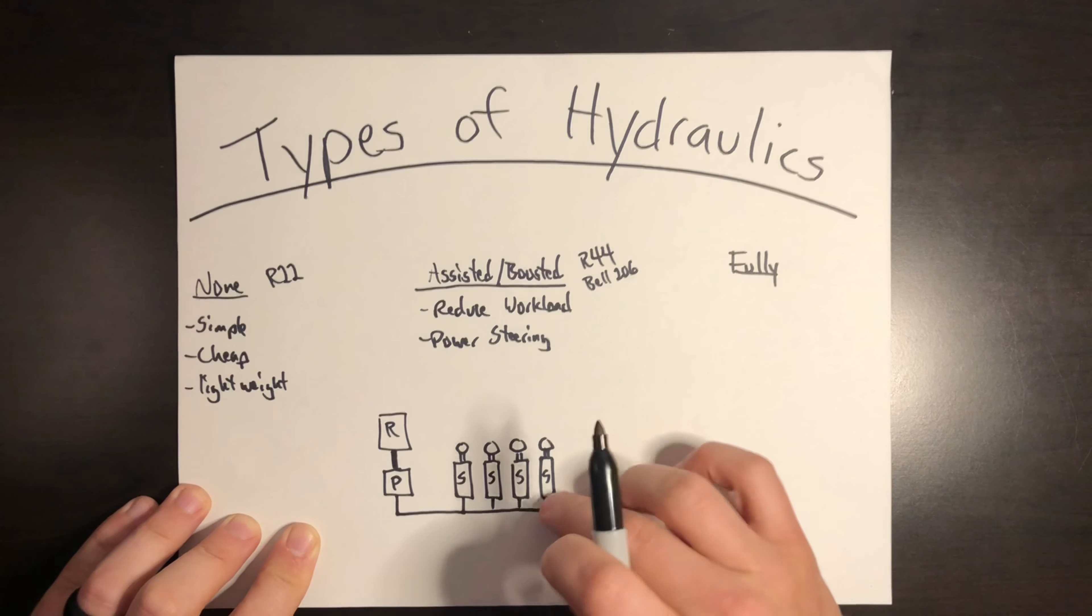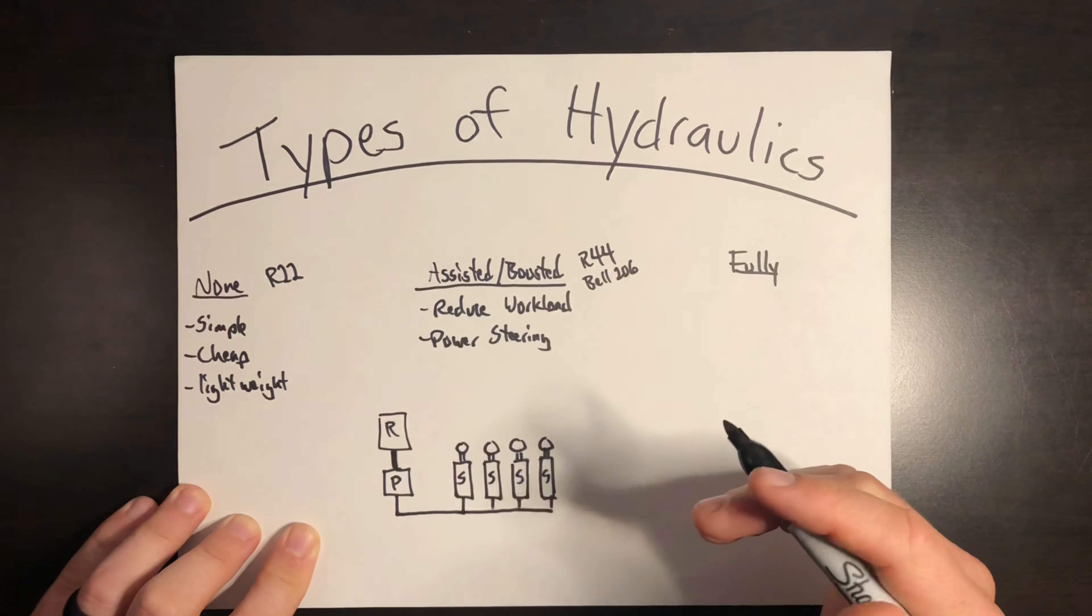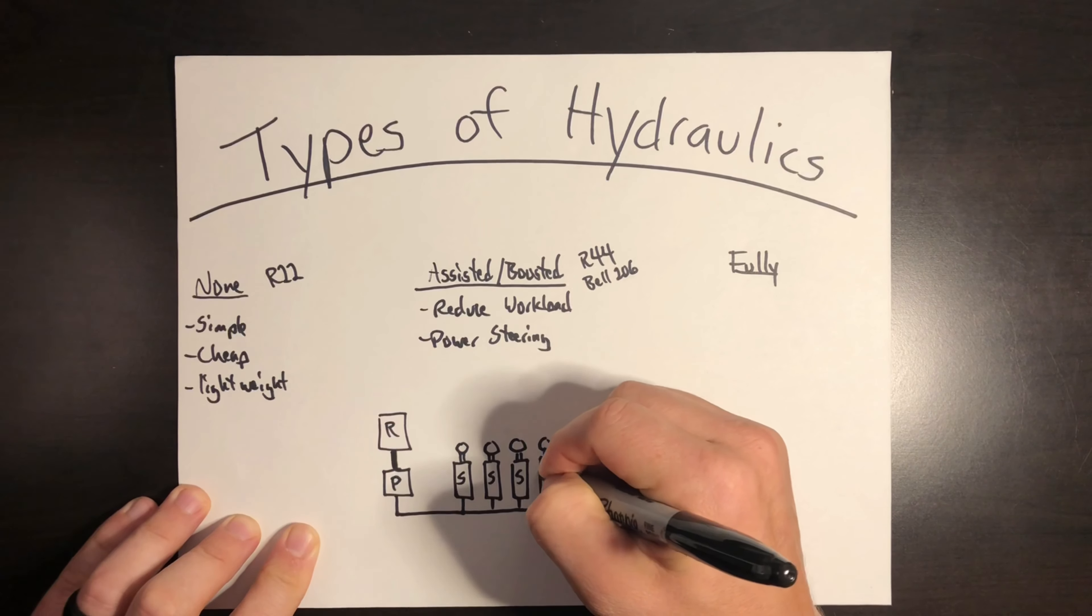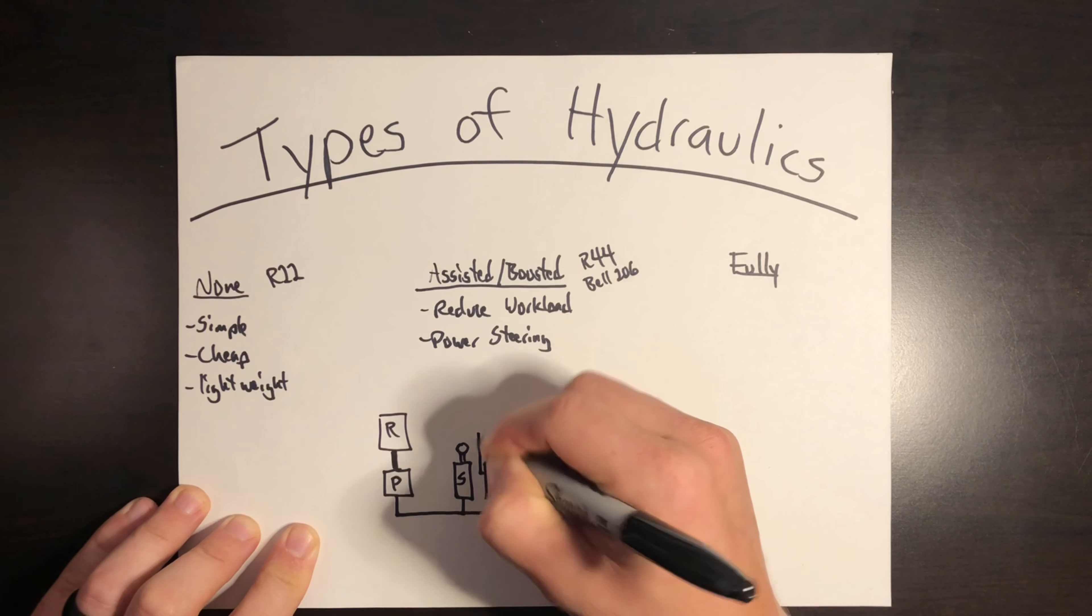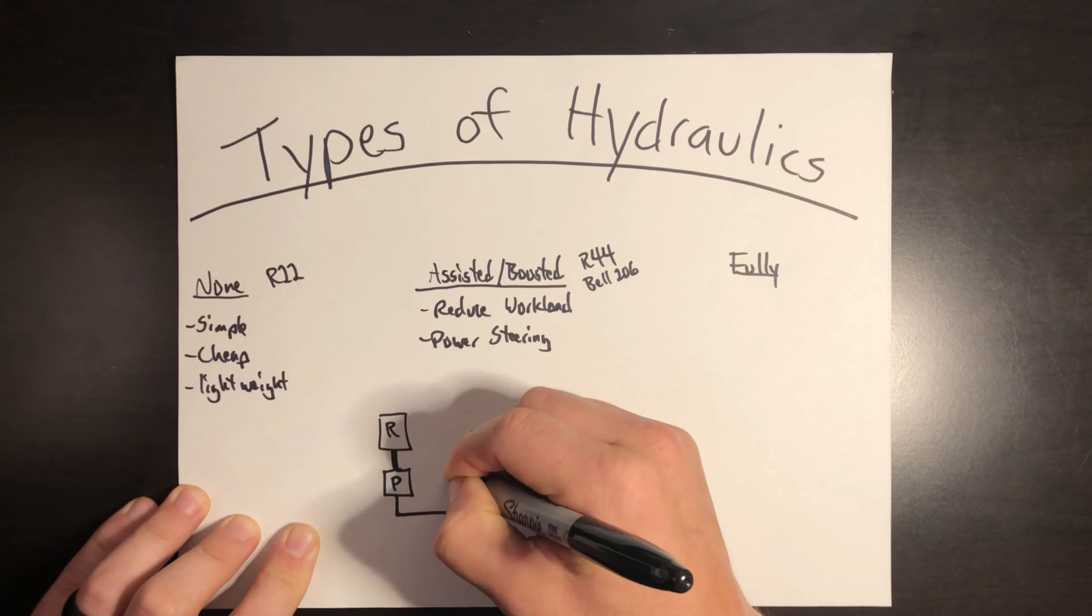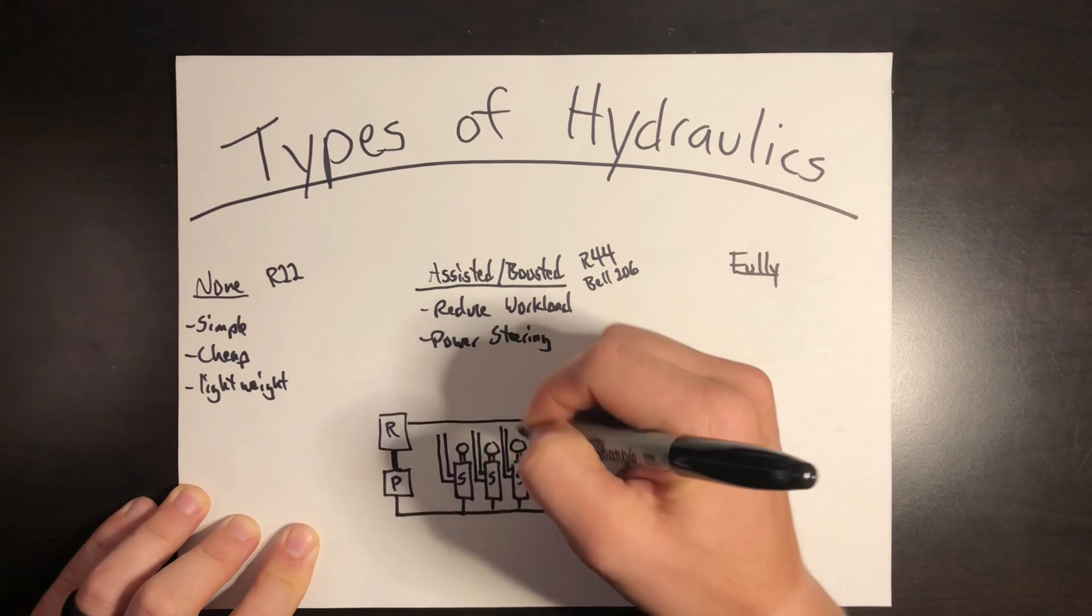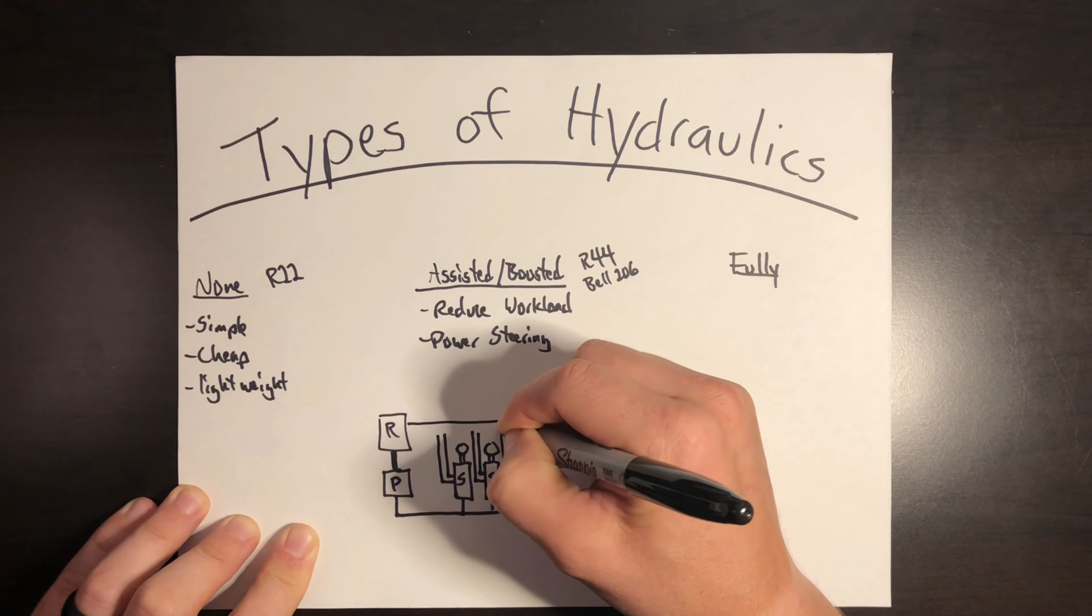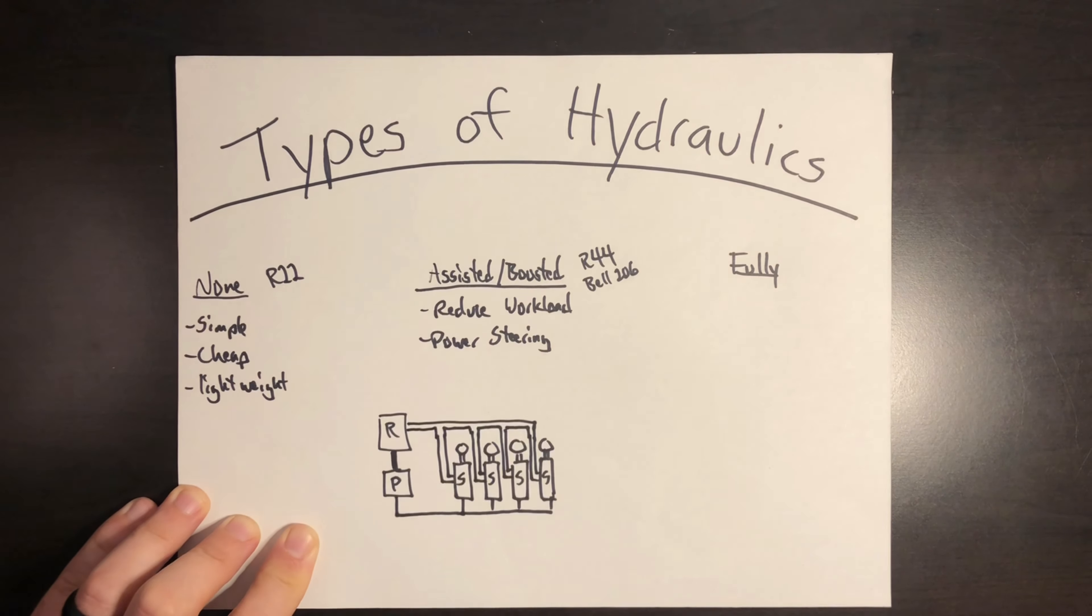So you're going to have something like the lateral servo, the longitudinal servo, a collective servo. These three are attached to the non-rotating swashplate of the main rotor. So when you think lateral, think left and right inputs, longitudinal being forward and back inputs, collective being the entire swashplate goes up and down. Some helicopters are going to have a tail rotor servo. Some don't see the need in having hydraulics on the tail rotor. It just depends. So that tail rotor one isn't always there. But this pump is pressurizing the fluid to the servos to move these flight controls.